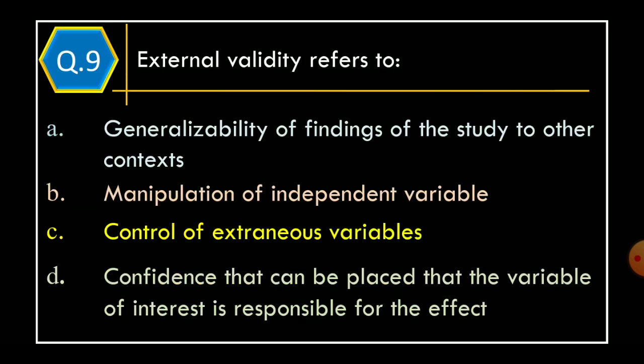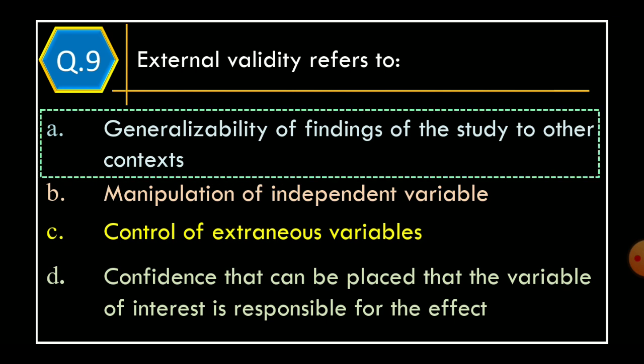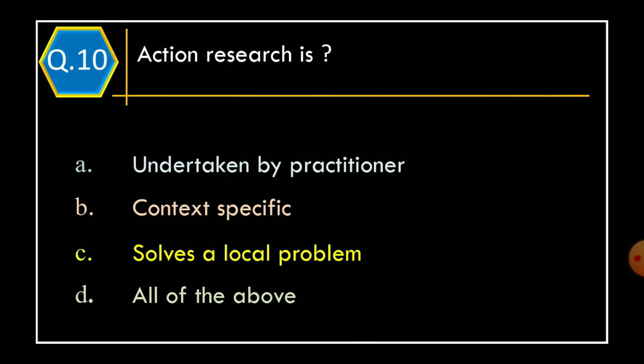Question 9: External validity refers to — Option A: generalizability of findings of the study to other contexts. Option B: manipulation of independent variable. Option C: control of extraneous variables. Option D: confidence that can be placed that the variable of interest is responsible for the effect. The correct option is Option A, generalizability of findings of the study to other contexts.